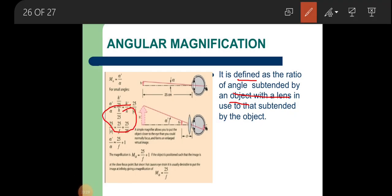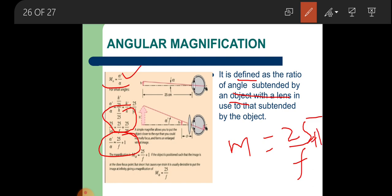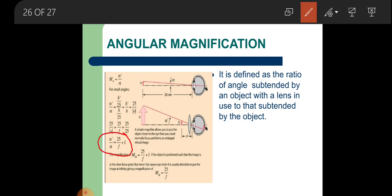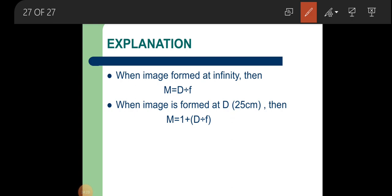The mathematical calculations for derivation are not in your syllabus. The basic formula for magnifying power M is: when the image is formed at a distance of 25 centimeters, M = 1 + D/f, also written as 25/f + 1. When the image is formed at infinity, the formula is M = D/f. Whenever you are asked to calculate magnifying power, use these formulas accordingly.